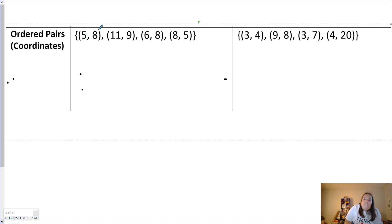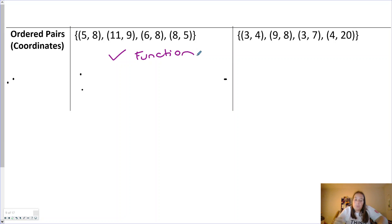Here we look and we have (5,8), (11,9), (6,8), and (8,5). Check. Definitely a function. And once again, when you're asked to explain, it's because each input has exactly one output. 5 is only used once, 11 used once, 6 used once, 8 used once. Inputs are what matters.